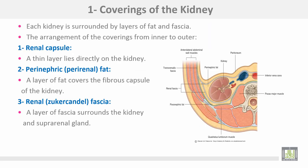The coverings of the kidney: each kidney is surrounded by layers of fat and fascia. The arrangement of the coverings from inner to outer is as follows. Number one is the renal capsule — a thin layer that lies directly on the kidney. Number two is the perinephric fat, or perirenal fat — a layer of fat that covers the fibrous capsule of the kidney.